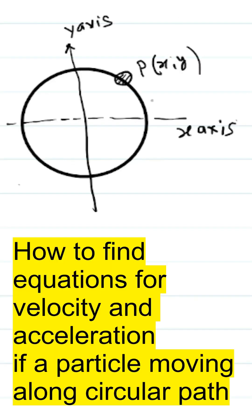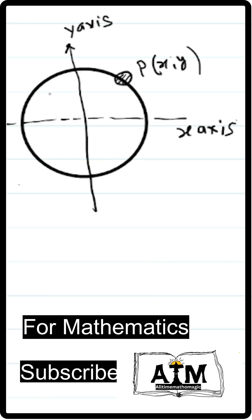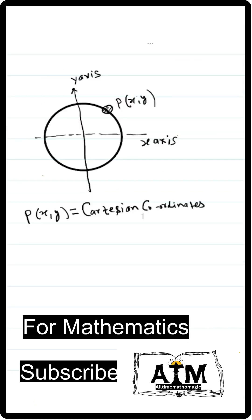Suppose we have a particle moving along the circumference of a circle, where r is the radius of the circle.